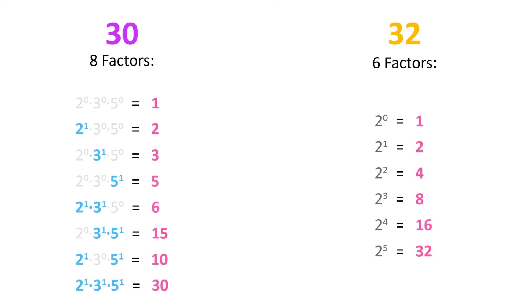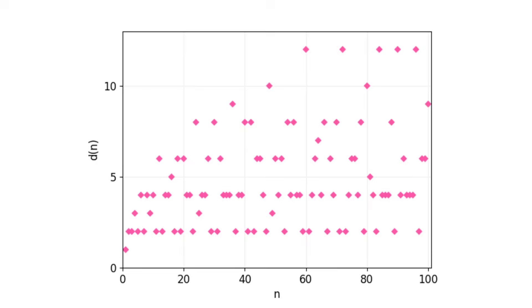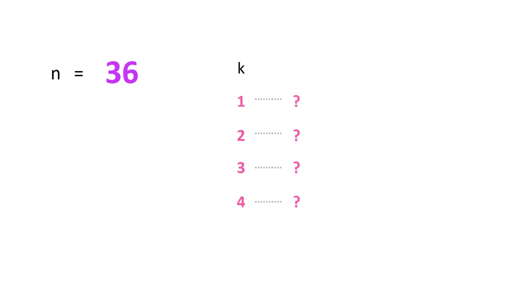As a function, the number of divisors of n is denoted d(n), or sigma zero of n, and its graph looks like this. Primes always score two, and composite numbers score more than two. One thing you'll notice is that the scores are almost always even. This is because factors usually come in pairs. If k is a factor of n, then so is n over k. The only way to have an unpaired factor is if there's a k, where k equals n over k. In other words, n is k squared, so the only numbers that get an odd score are all the square numbers.